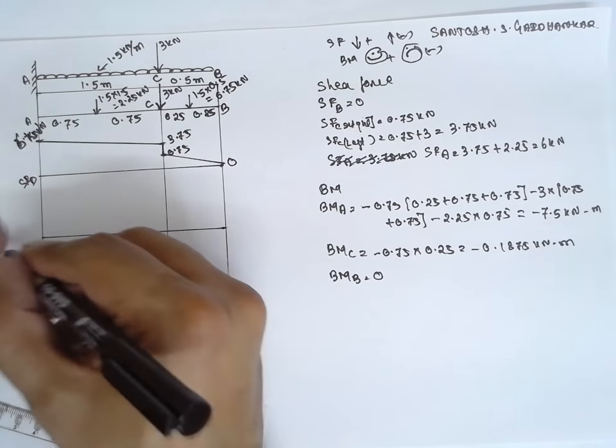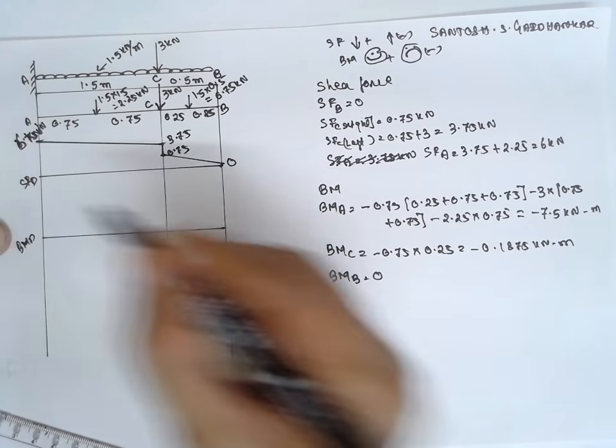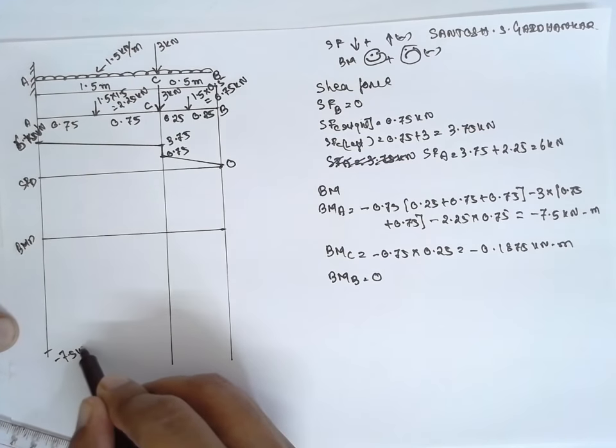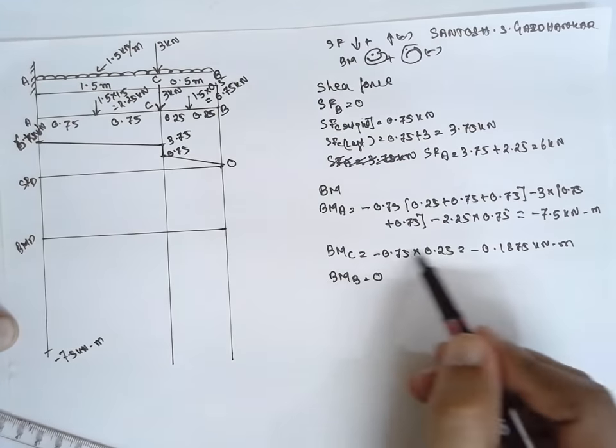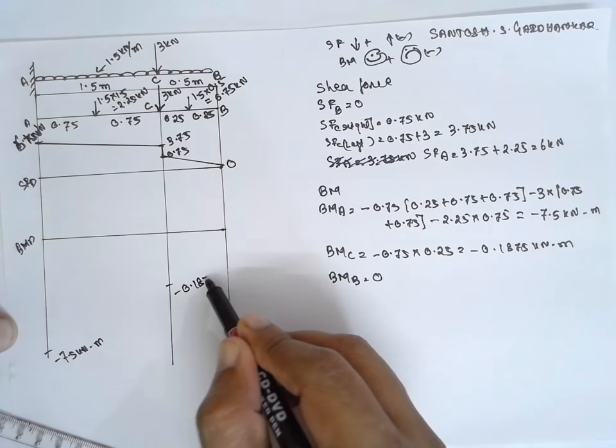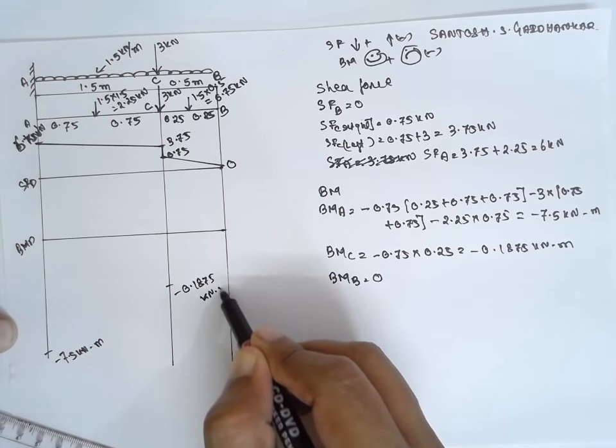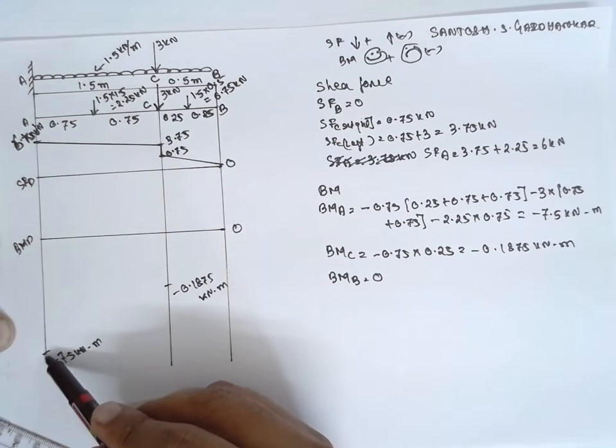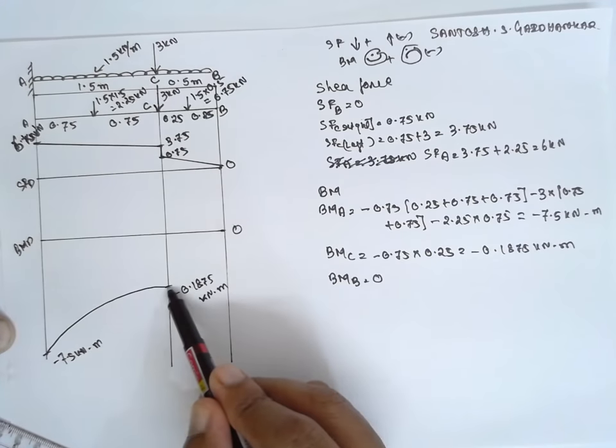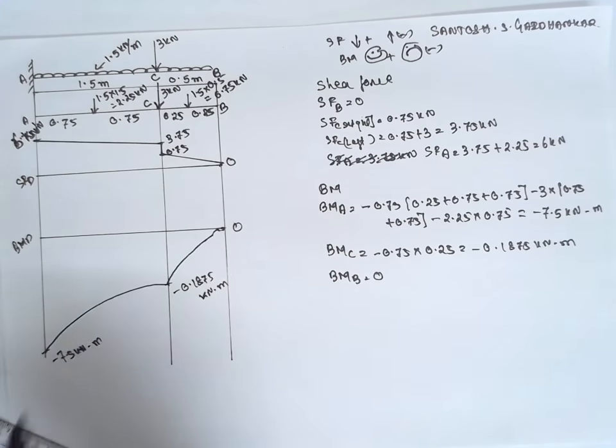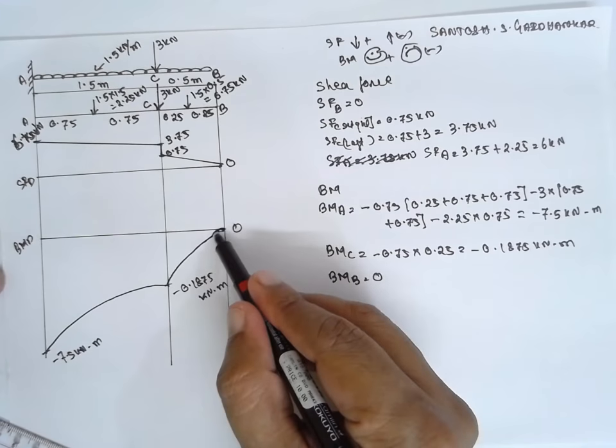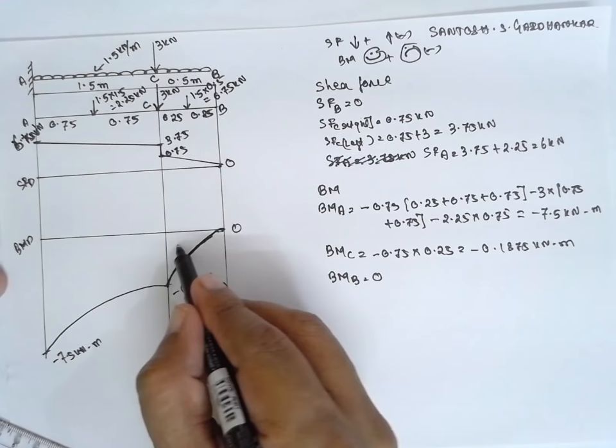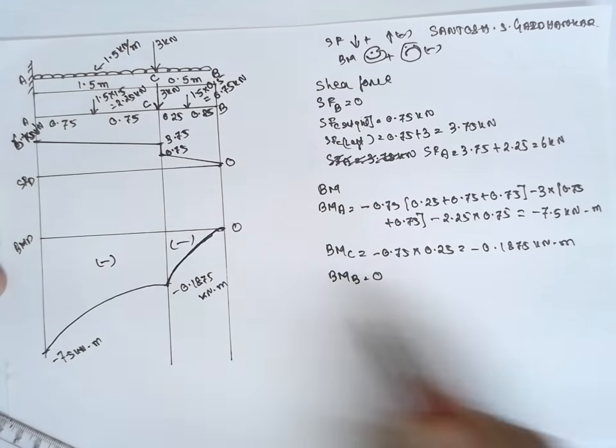This is positive side, this is negative side. First value is A minus 7.5. Here, because of UDL, you have to draw parabola in this way because of UDL. If it is a point load, you have to draw a line. Because of UDL, you have to draw parabola. Negative, negative. In this way, you have to solve the problem when the cantilever is subjected to completely UDL with a point load.